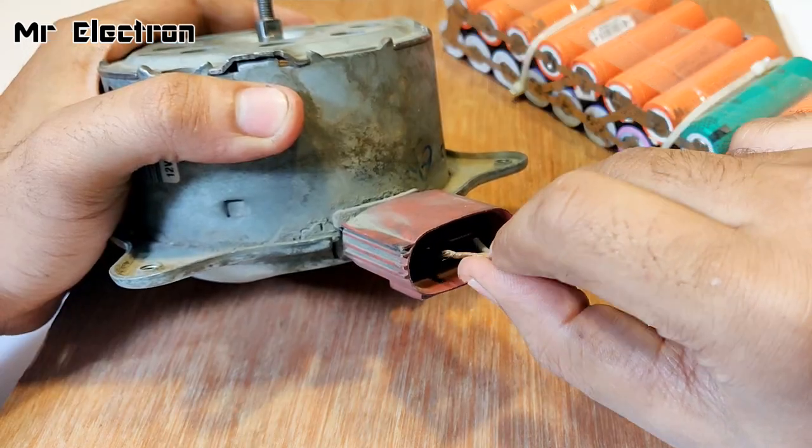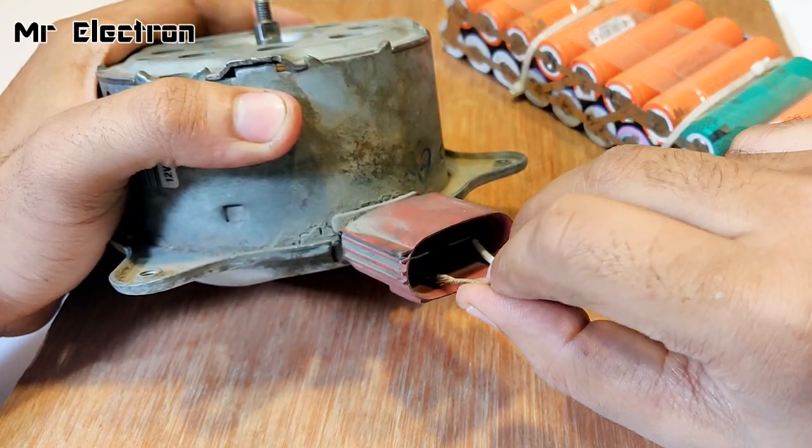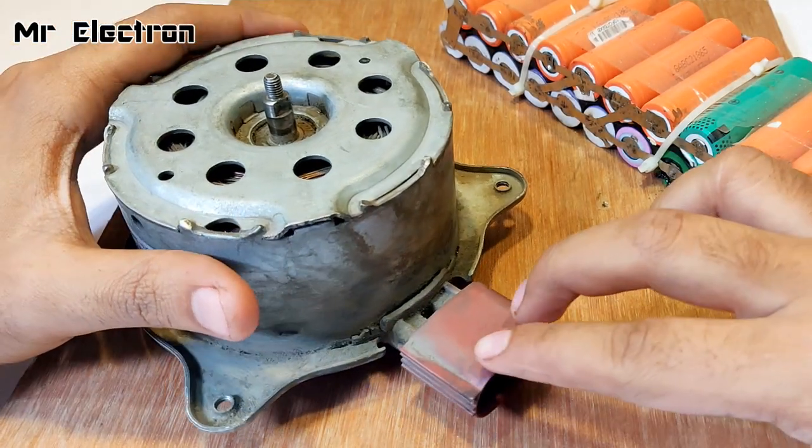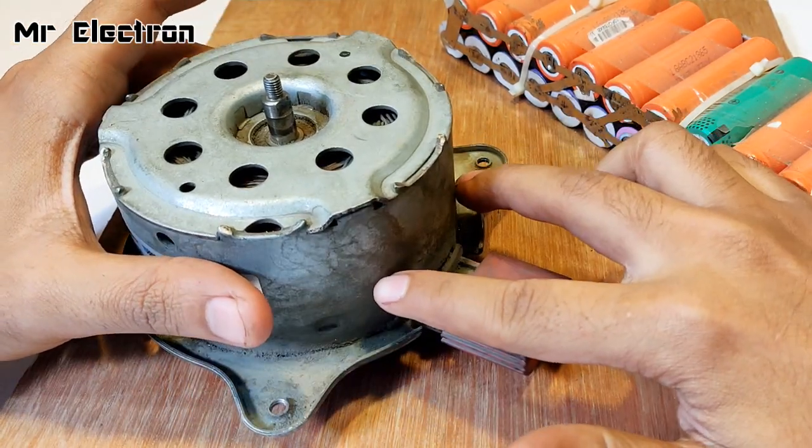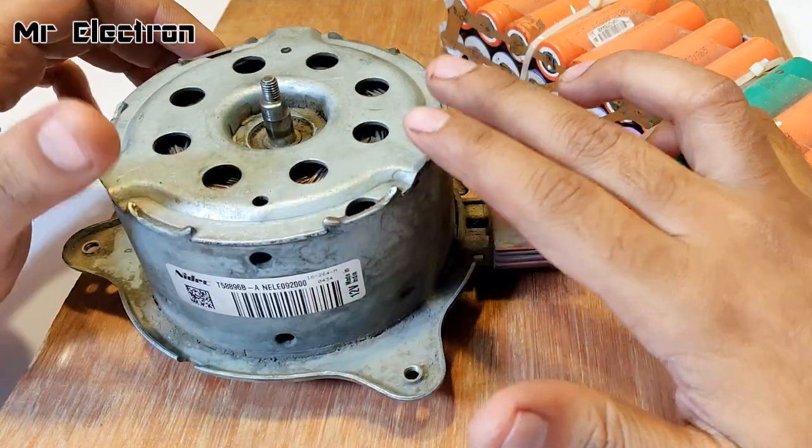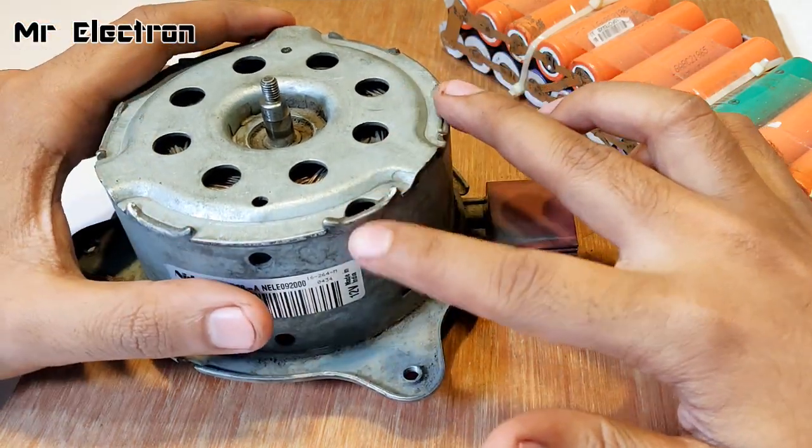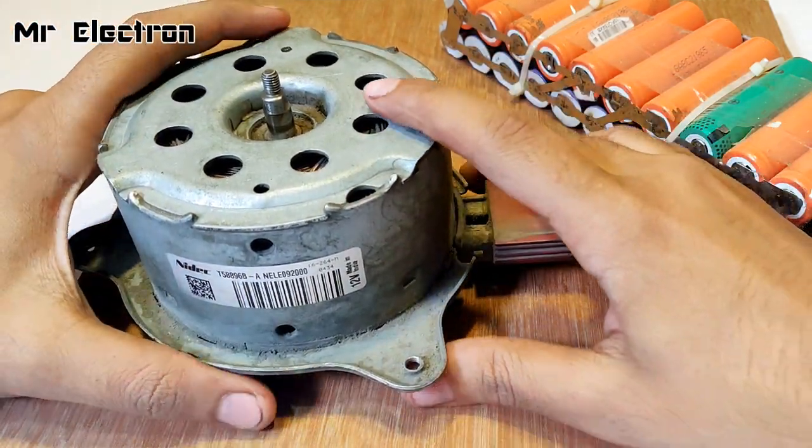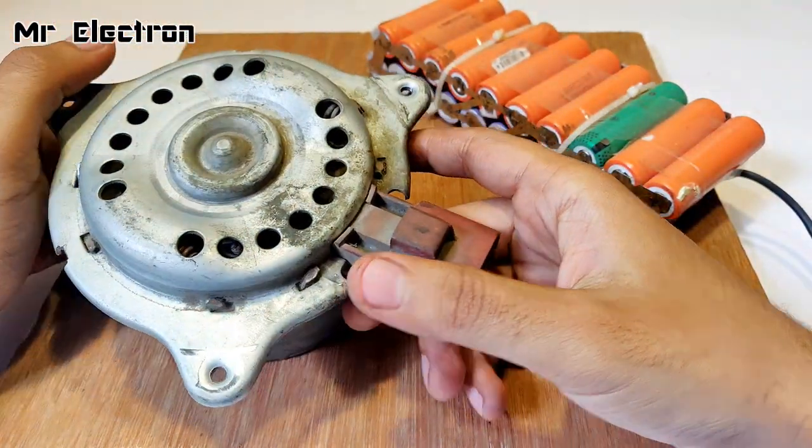Even though I'm connecting the terminals, there is no spark, which indicates that the power supply is not getting inside through the brushes to the armature. Something is wrong either with the commutator or with the brushes, so we'll have to open it up and see what the problem is.